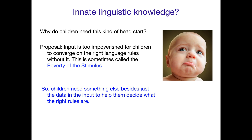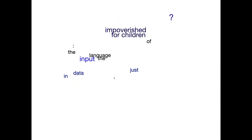The input is too impoverished — that's the poverty part — and stimulus refers to input. So poverty of the stimulus is impoverished input. And the idea is that children need something else besides just the data out there and the input to help them decide what the right rules are.